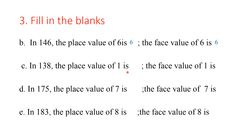In 138, the place value of 1: 1 is in the 100's place, so the place value is 100. The face value of 1 is the actual number, which is 1. In 175, the place value of 7: 7 is in the 10's place, so the place value is 7 tens, which is 70. The face value of 7 is 7.